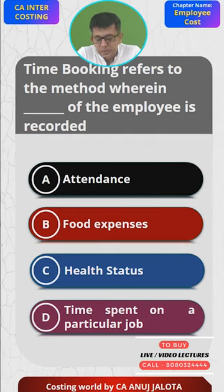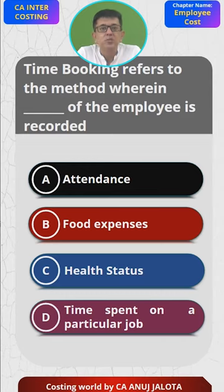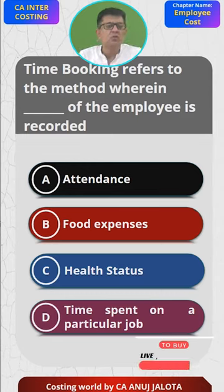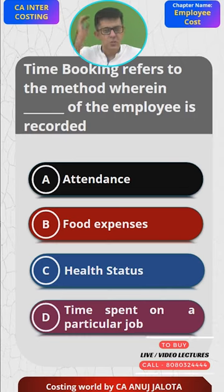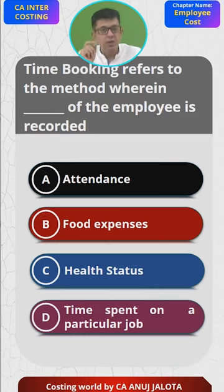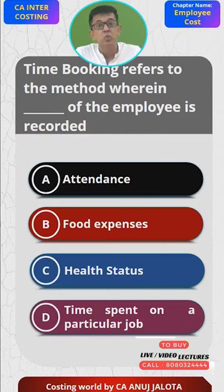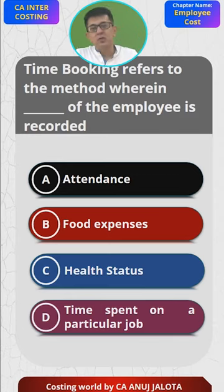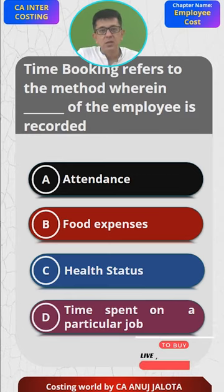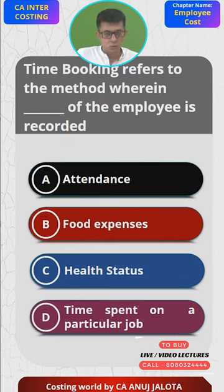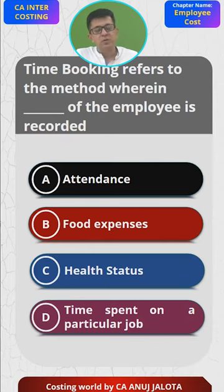Time booking means this: a particular worker will be working in a factory on various jobs, and how much time he spends on every job should be recorded, so you can find out the cost of every job separately. For example, a worker works for 10 minutes on Job X, then shifts to Job Y for 15 minutes, then moves to Job Z, and so on.